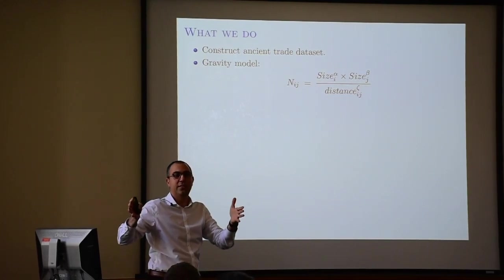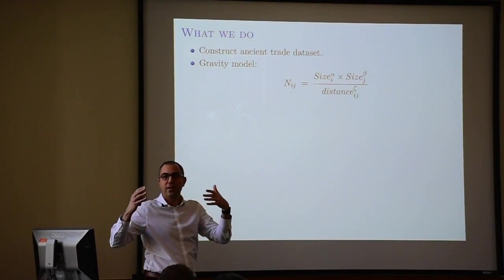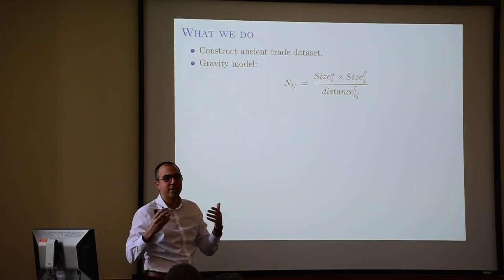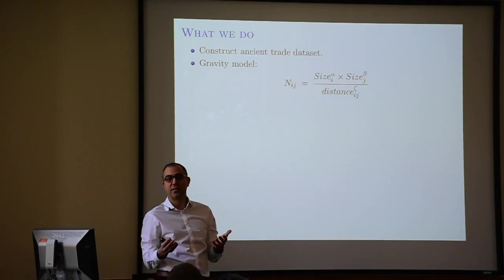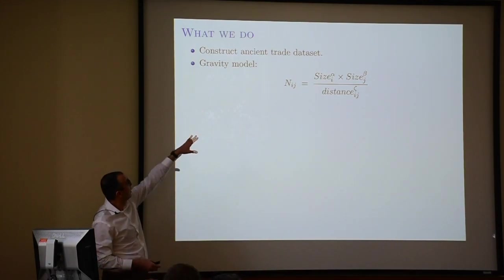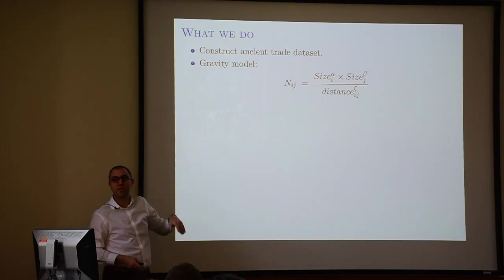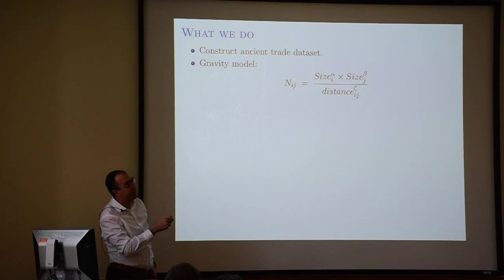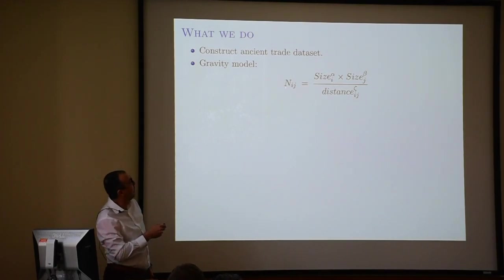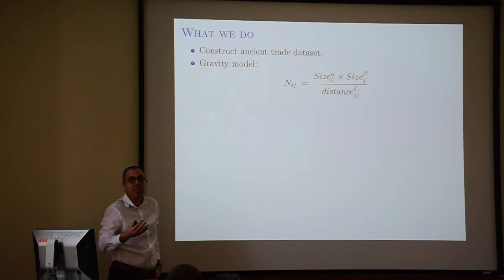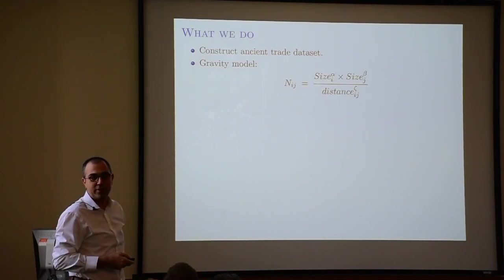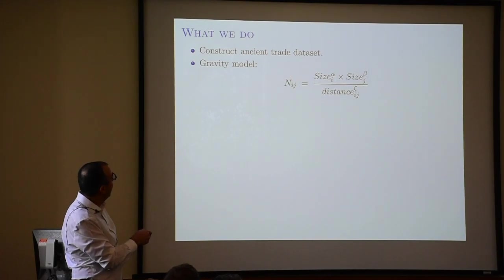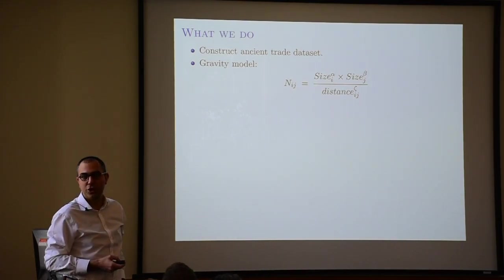We thought, what do we do with this data set? One of the standard statistical models of trade is something we all know very well: gravity. Objects that are near are more related to each other than objects that are far apart. Just take Newtonian gravity — the relationship between objects i and j is increasing in their size and decreasing in the distance between them.